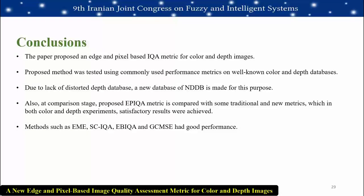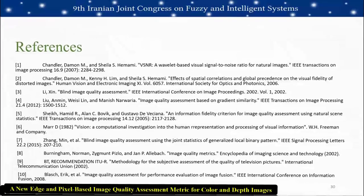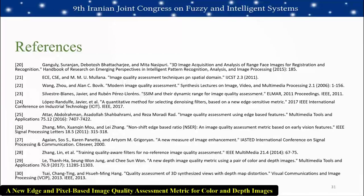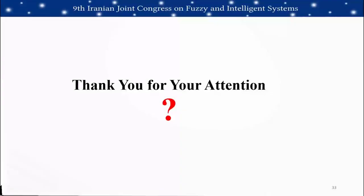In conclusion, this paper proposed an edge and pixel based IQA metric for color and depth images. The proposed method was tested using common performance metrics on well-known color and depth databases. Due to the lack of distortion types in existing depth databases, a new NDDB database was created. The proposed EPIQA metric was compared with traditional and new metrics including EME, SCIQA, EBIQA, and GCMSE, achieving satisfactory results in both color and depth experiments.